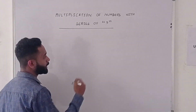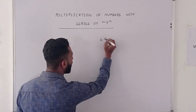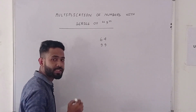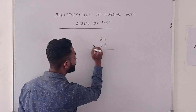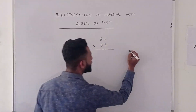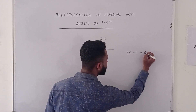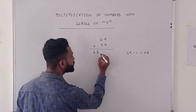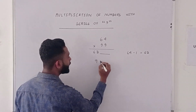I am going to take a number 64. So if I take 64 into 99, there is a technique to use — it is very simple. The first part of the answer is 63, which is 64 minus 1. Next to that number, you can get the remaining digits from 99.